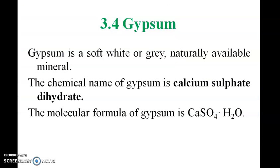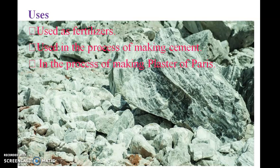Gypsum is a soft white or grey naturally available mineral. The chemical name of gypsum is calcium sulphate dihydrate, with the formula CaSO4·2H2O. It is used in fertilizers, in the process of making cement, and in the process of making plaster of Paris.